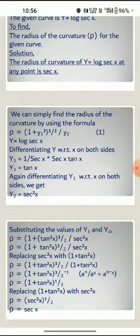For y = log sec x, differentiating y with respect to x on both sides: y₁ = (1/sec x) × sec x × tan x = tan x. Again differentiating y₁ with respect to x on both sides, we get y₂ = sec²x.